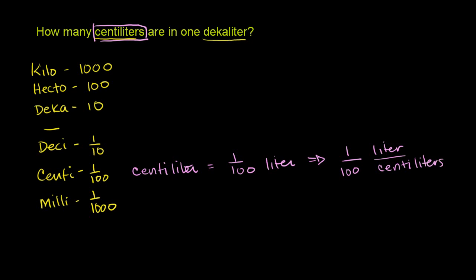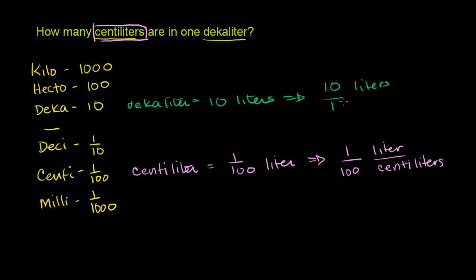Now let's think about the decaliter. Deca is right over here, so a decaliter means 10 liters. Another way to say it: for every 10 liters, you have 1 decaliter. We're going from a smaller unit to a larger unit, so there are going to be many of the smaller units in one of the larger ones.